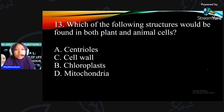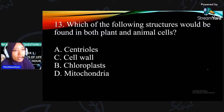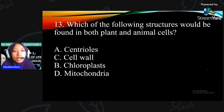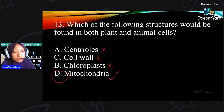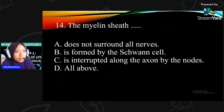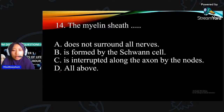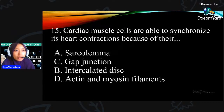Which of the following structure will be found in both plant and animal cell? Centriole - plant cell tak ada. Cell wall - animal cell tak ada. Chloroplast - animal cell tak ada. Mitochondrion - yes, dua-dua ada. Jawapannya D.